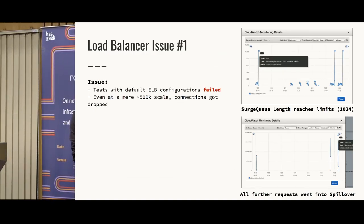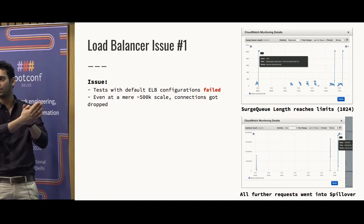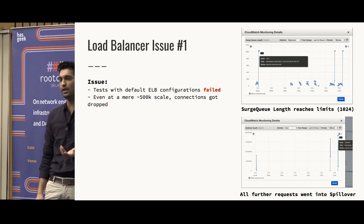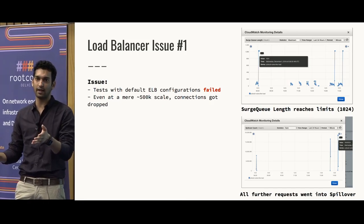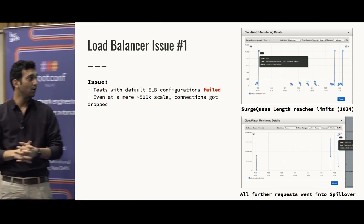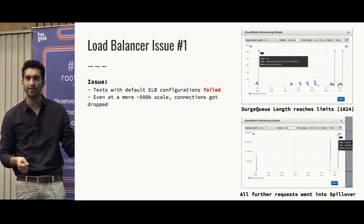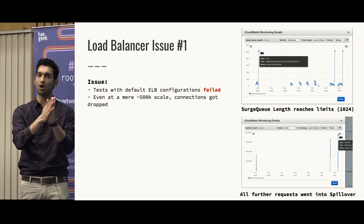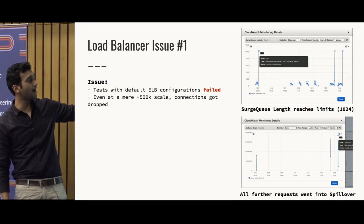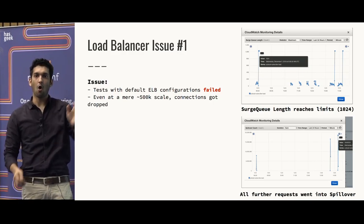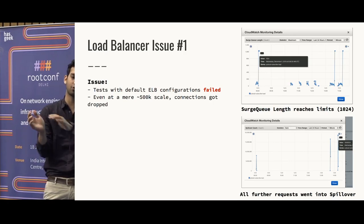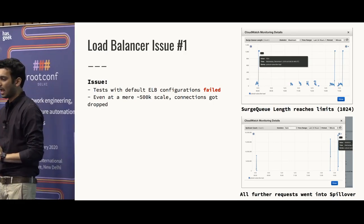We ran the 2 million test with a load balancer in default configuration — it failed miserably. We couldn't even go beyond 500K, which was one-fourth of previous performance, and this was just at the connection phase, not even message delivery. Looking at the metrics, connection drops coincided with the surge queue length hitting 1024, and spillover count went to millions. All our connection attempts were not being served — the load balancer said it couldn't take more than 1024 and dropped everything else.